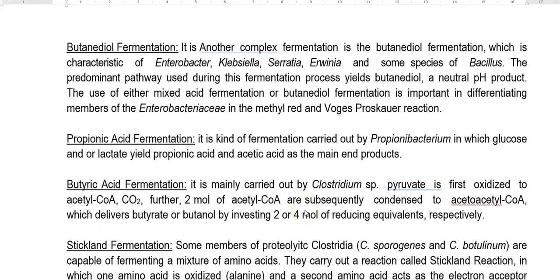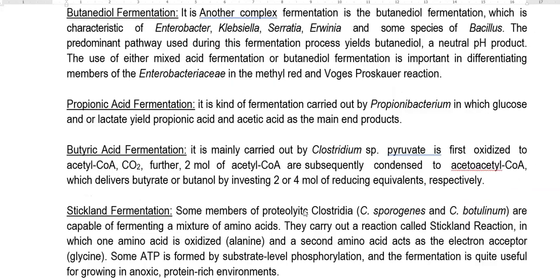The next group of fermentation is butanediol fermentation. It is a complex fermentation process operating in Enterobacter, Klebsiella, Serratia, Erwinia, and certain Bacillus species. During this process, it results in the yield of butanediol, a neutral pH product. This particular product plays a major role in differentiating members of Enterobacteriaceae, mainly in the Methyl Red and Voges-Proskauer reactions, which are used for biochemical identification of organisms.